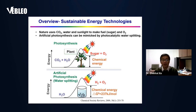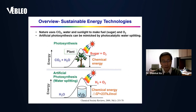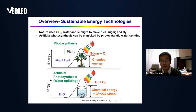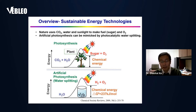If you look at nature, one very important thing is that plants use carbon dioxide, water, and sunlight to make fuels in the form of sugar and oxygen. This process is green, clean, and sustainable. If we can mimic this process, we can actually create a clean energy technology.